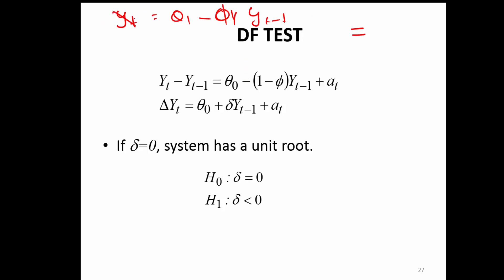What we do is simply subtract y_t minus 1 from left and right. Y_t minus y_t minus 1 equals theta_0 plus phi y_t minus 1 plus a_t.